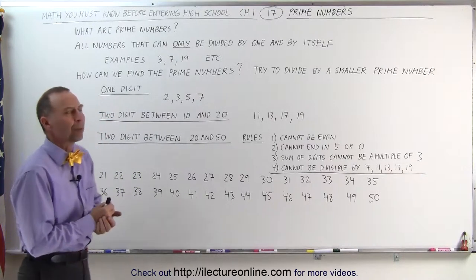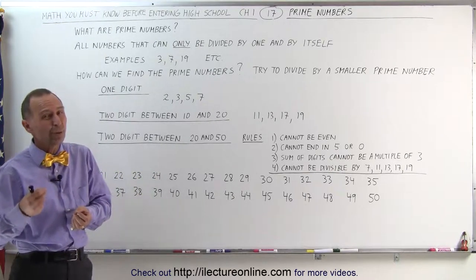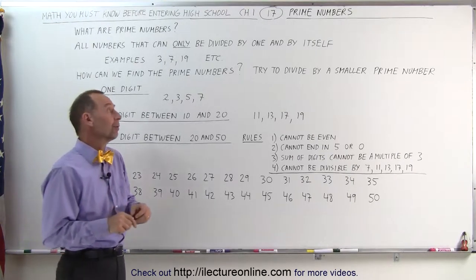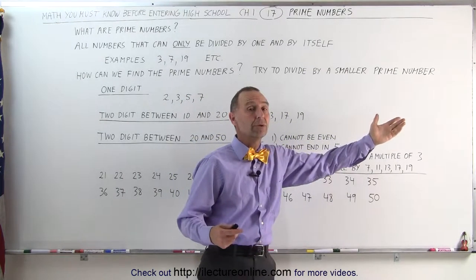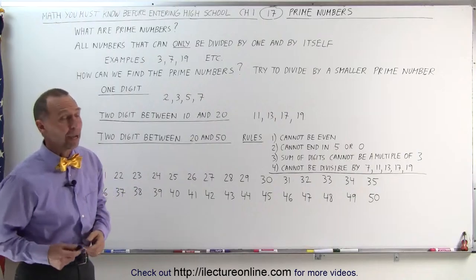How do you find the prime numbers? How can you pick a number and realize it's a prime number? Well, there's some ways in which we can get a pretty good idea whether or not a number is a prime number. First of all, the main idea is try to divide the number by a smaller prime number and see if it's possible. If it is, then it's not a prime number.